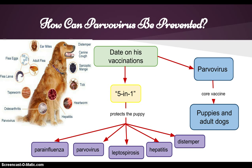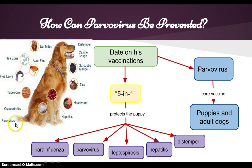How can parvovirus be prevented? You can protect your dog from the virus by making sure your pet has the necessary vaccinations. Parvovirus should be considered a core vaccination for puppies and adult dogs. An important combination vaccine protects the puppy against diseases such as parainfluenza, parvovirus, leptospirosis, hepatitis, and distemper. In this picture, you can see the different diseases covered by the vaccine for pets.